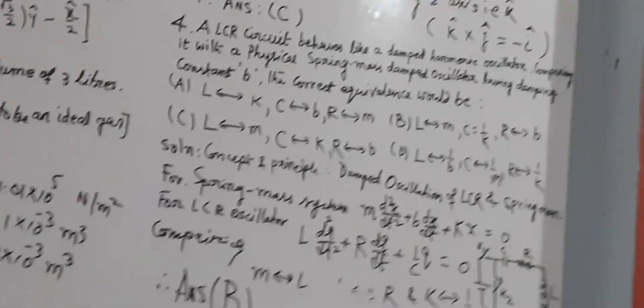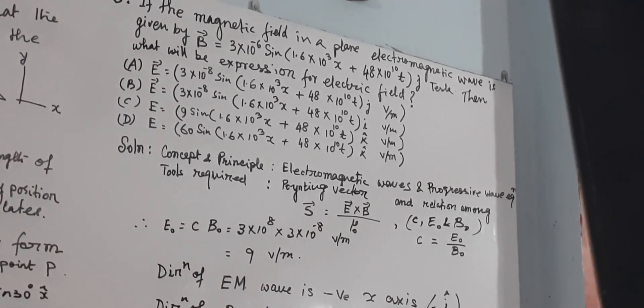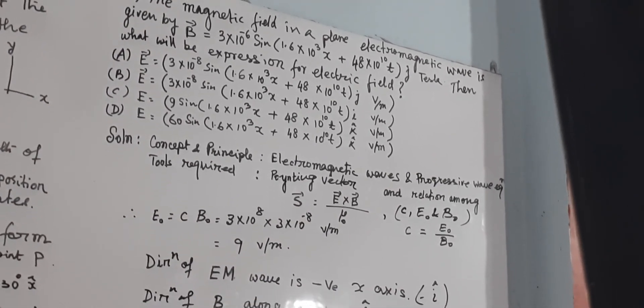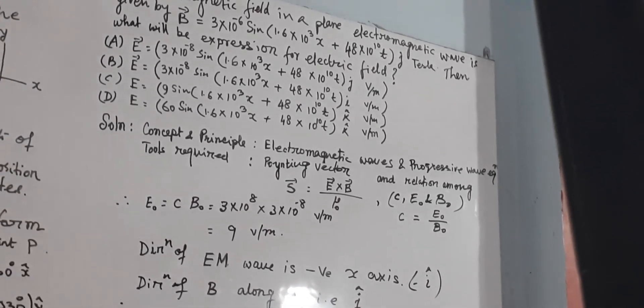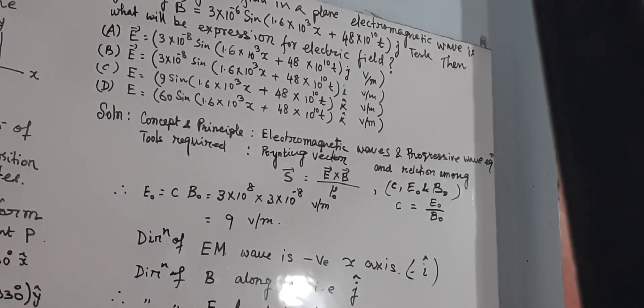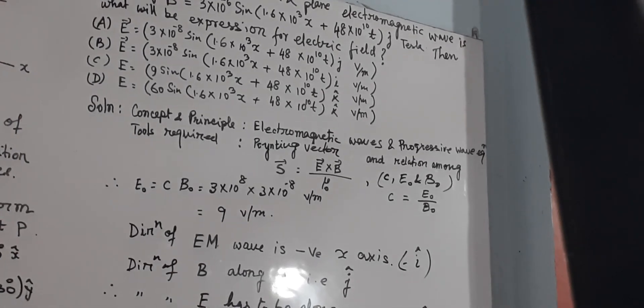Question number 3. If the magnetic field in a plane electromagnetic wave is given by B equal to equation is provided, it is along J direction, Tesla is the unit, then what will be the expression for electric field?